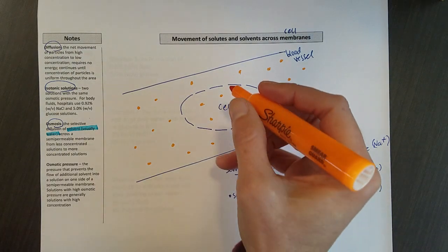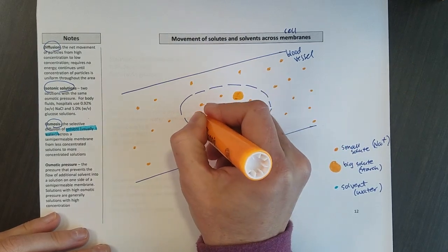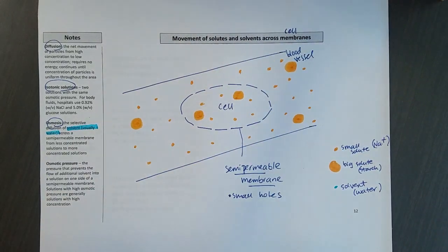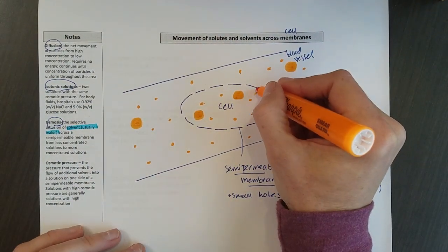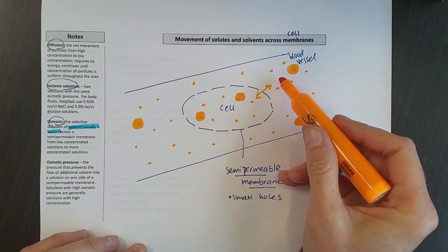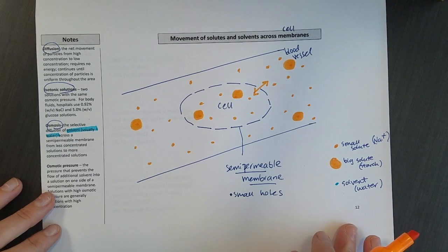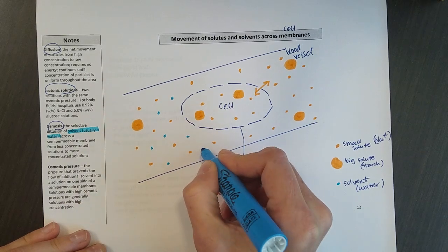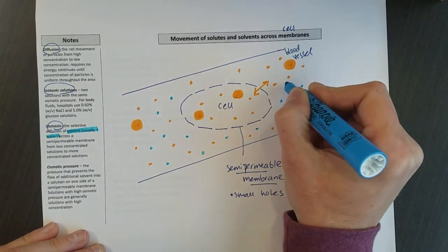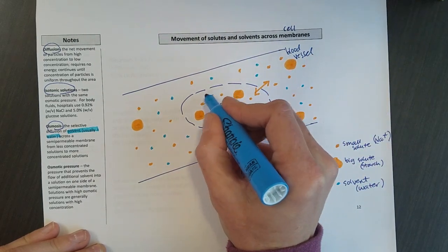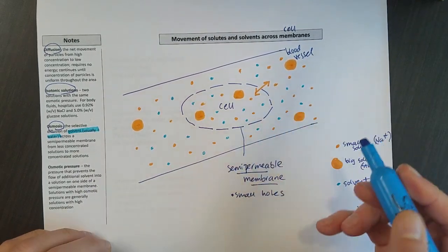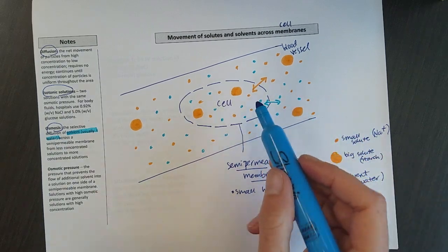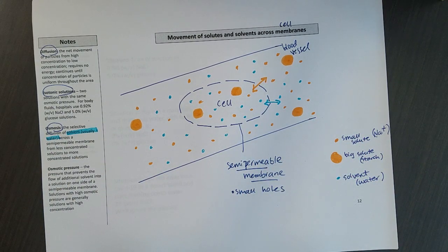There will be some large solute particles inside and also some large solute particles outside. Those aren't going to be able to move across those small holes. But these small solute particles, because it's isotonic, they're going to be moving out and they're going to be moving in. There's a dynamic shift of those particles in and out. There's also lots of water outside the cell and also lots of water inside of the cell. And again, because these solutions are isotonic, that water is small and it's going to be moving out and in of the cell.